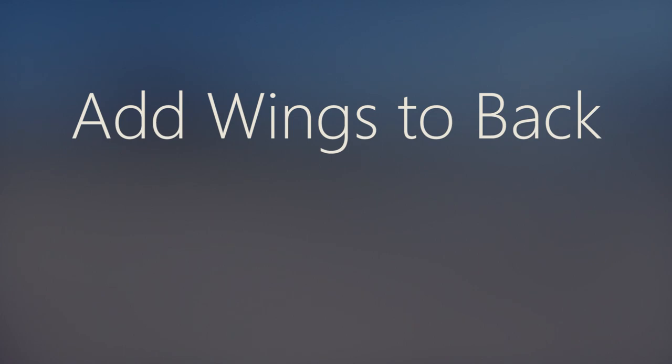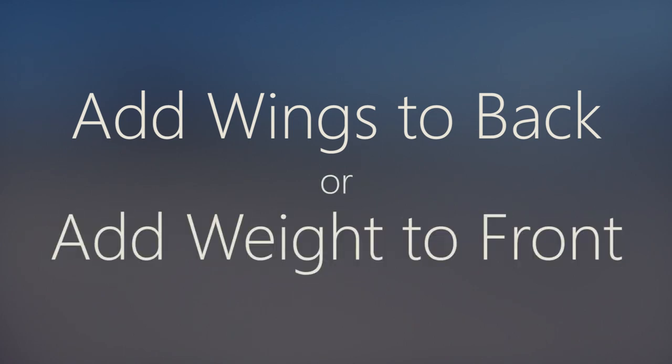There are two options. We can either bring the center of pressure backward by adding big wings, or we can add weight to the front of the rocket to bring the center of mass forward. Or both.